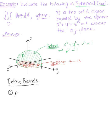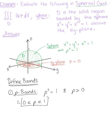Let's find our rho bounds first. Rho is the radius of the sphere. Since we know from our bounding curves that rho squared equals 1, and rho must be positive or greater than or equal to 0, the bounds on rho are: rho must be greater than or equal to 0 and less than or equal to 1, because that is the radius of our sphere.